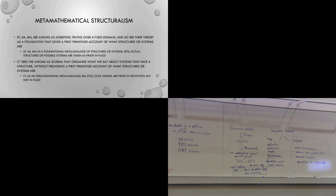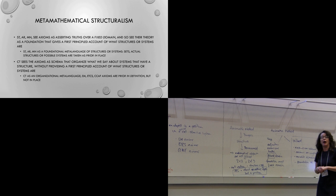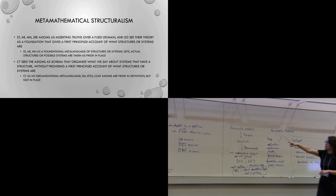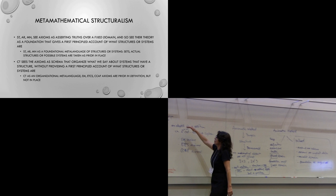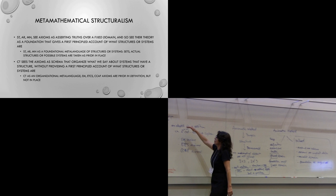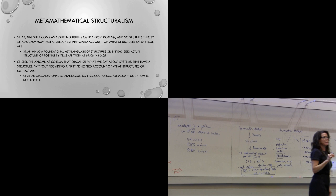Any time we talk about prior in place, we ask questions like where? How do we access them? And then we start talking metaphysically. I don't want to do that. On the other hand, category theory sees the axioms as schema that organize what we say about systems that have a structure, without providing that first-principled account of what structures or systems are. So these axioms — the Eilenberg-MacLane axioms, ETCS, CCAF — have a notion of priority, but it's prior in definition, not prior in place.